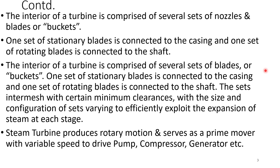The interior of a steam turbine has several sets of nozzles, also called buckets or blades. One set of stationary blades is connected to the casing, and one set of rotating blades is connected to the shaft. The sets mesh with certain minimum clearance, with the size and configuration of sets varying to efficiently exploit the steam expansion at each stage.